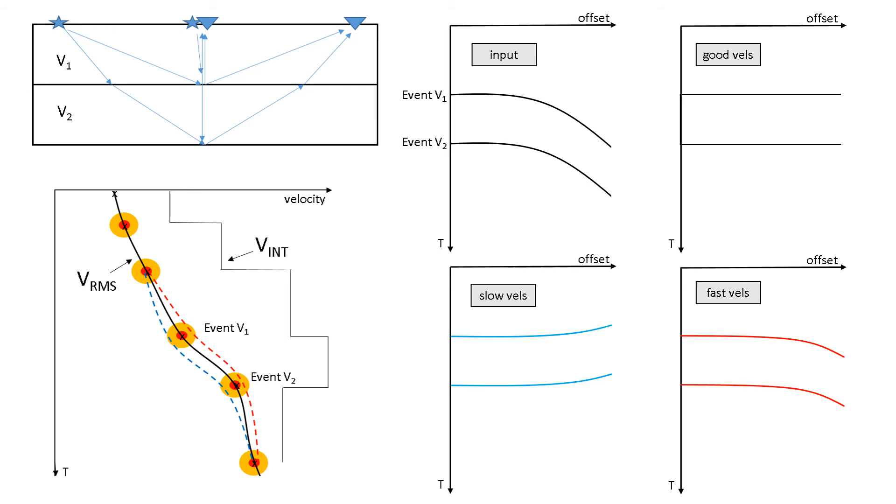Interval velocities are used for depth migration, which is a whole other subject. Talking about time stack and time migration here, which uses RMS.